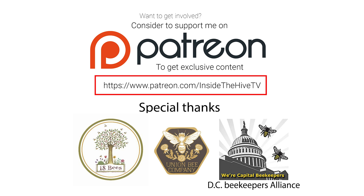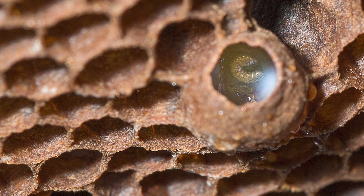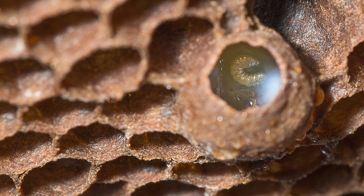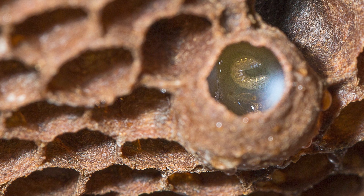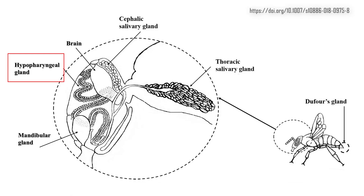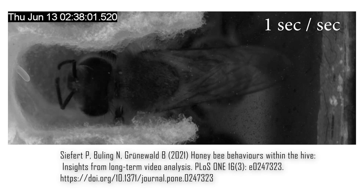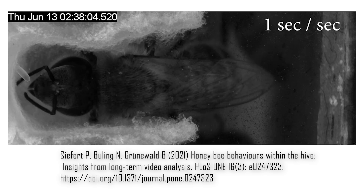Honeybee viruses were also found in early larval stages of honeybee queens. These could originate directly from the eggs, as mentioned, or from nurse worker bees transmitting viruses horizontally through infected food from glandular secretions. Honeybee viruses were found in the hypopharyngeal glands of worker bees, suggesting that nurse bees can develop latent virus infections and transmit viruses into the royal jelly that will be provided to the queen.